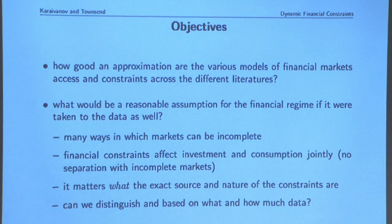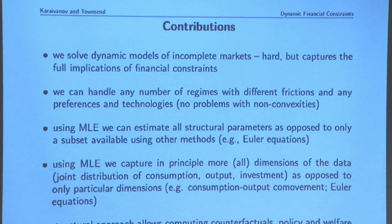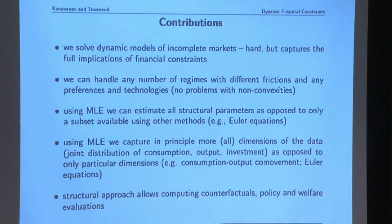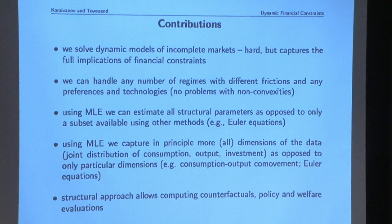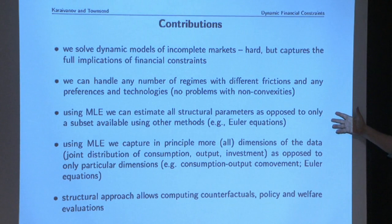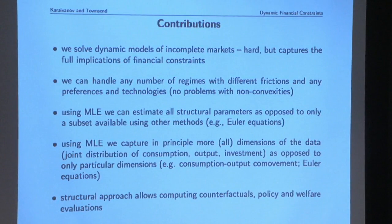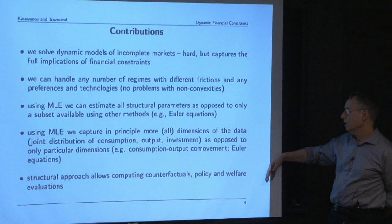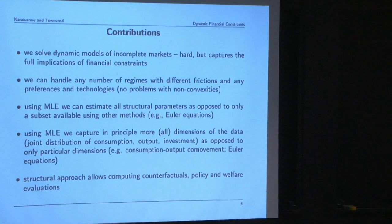The tools: we're solving these dynamic models. We can allow any number of financial information regimes. We're going to use maximum likelihood to estimate the parameters, which allows us to be more general—we can back out all the structural parameters, not just those in a particular Euler equation. And likewise, we can have more than one equation: we can look at not only consumption Euler equations but investment rate of return equations.